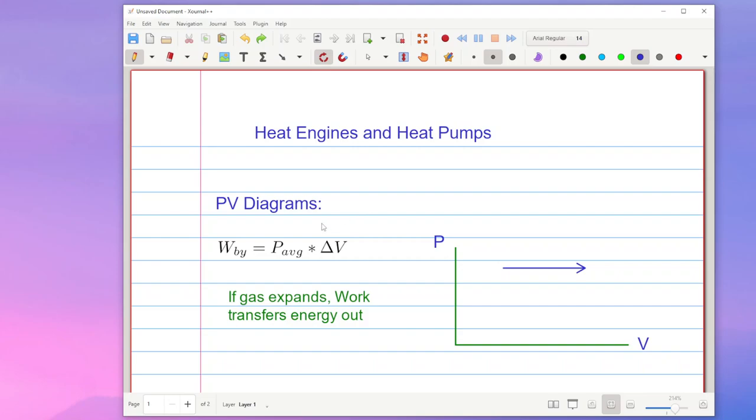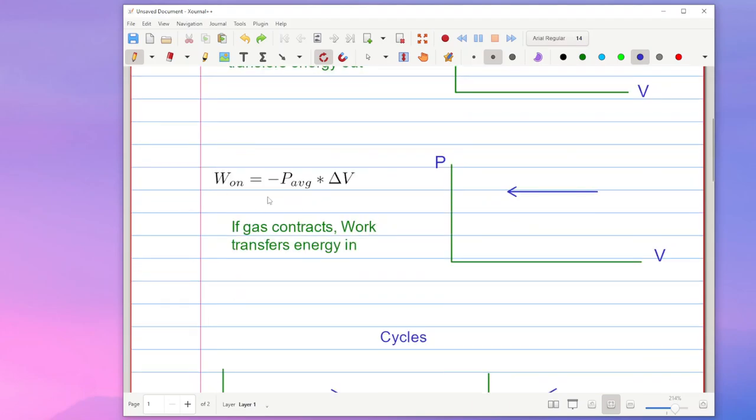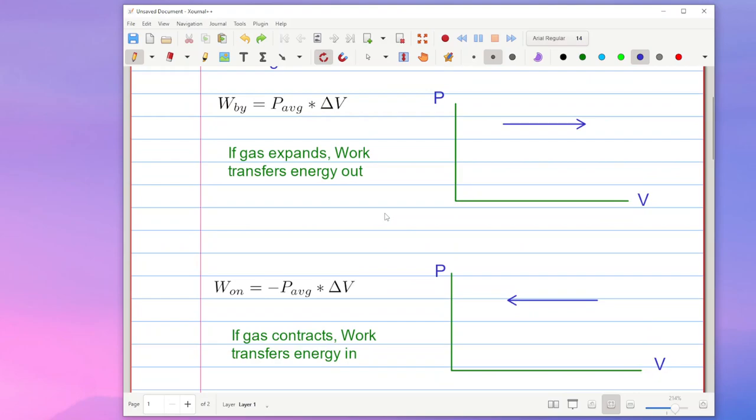Now we touched a little bit when we were talking about the PV diagrams about work done by a gas or work done on a gas. And the equation for the work done by a gas and the equation for the work done on a gas are very similar except for the sign. And we talked about how that matters which way is the energy being transferred.